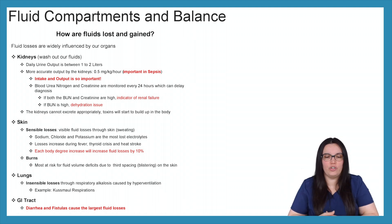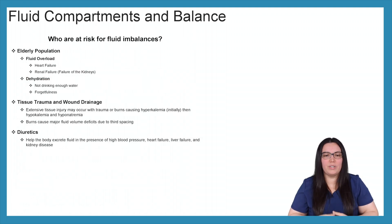And lastly, we have our GI tract. So diarrhea and fistulas cause the largest fluid volume losses when it comes to our GI tract. So who is most at risk for fluid imbalances? So we have our elderly population, those with tissue trauma and wound drainage, as well as those receiving diuretics. So beginning with our elderly population, they're at risk for two things. They're either going to be fluid overloaded, or they're going to be dehydrated. So as we know, as we get older, our elderly population starts to develop things such as heart failure or congestive heart failure, CHF, as well as renal failure, failure of our kidneys.